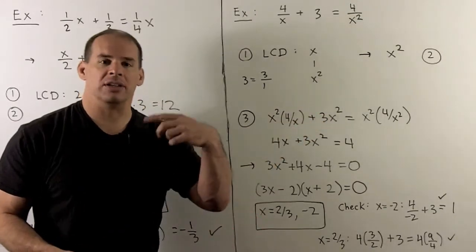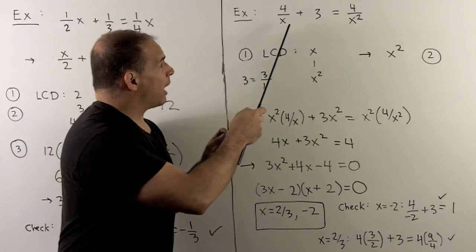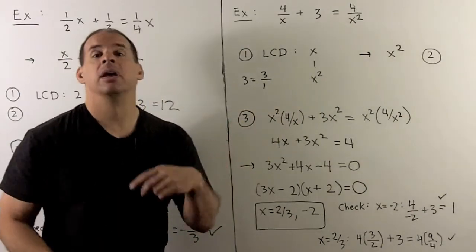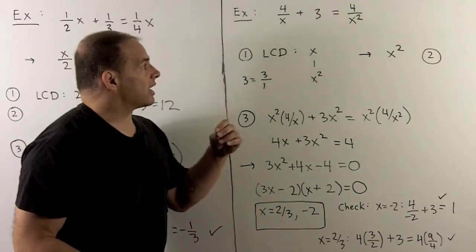The least common denominator is going to be x squared. Again, you don't need to do this work. You could just look at your equation and ask: what do I need to clear out both an x and an x squared? I need an x squared to do that.